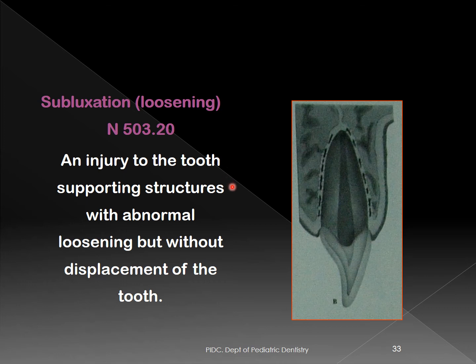In subluxation, the tooth has moved violently in its alveolar socket, severing some periodontal ligament fibers, causing the tooth to become loose in its socket. We can also have extrusive luxation, where the tooth has moved in the alveolar socket in an outward direction — partial displacement of the tooth out of the socket.